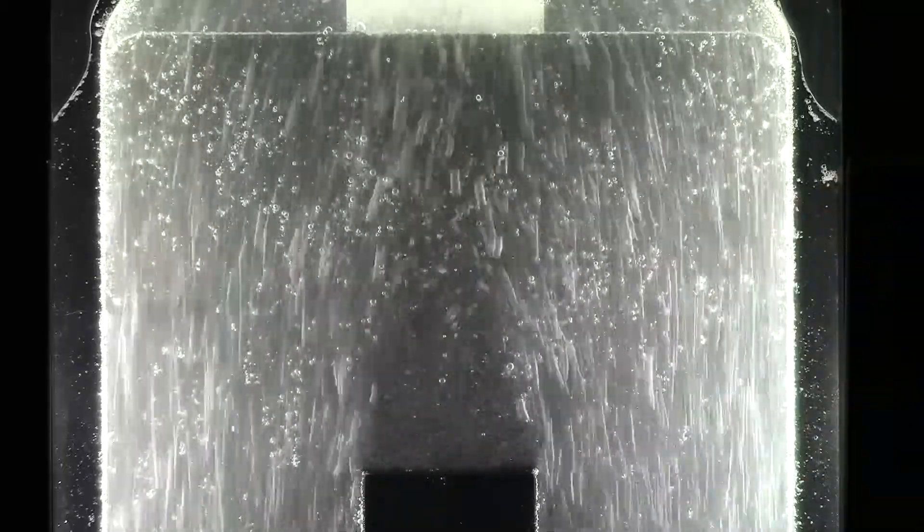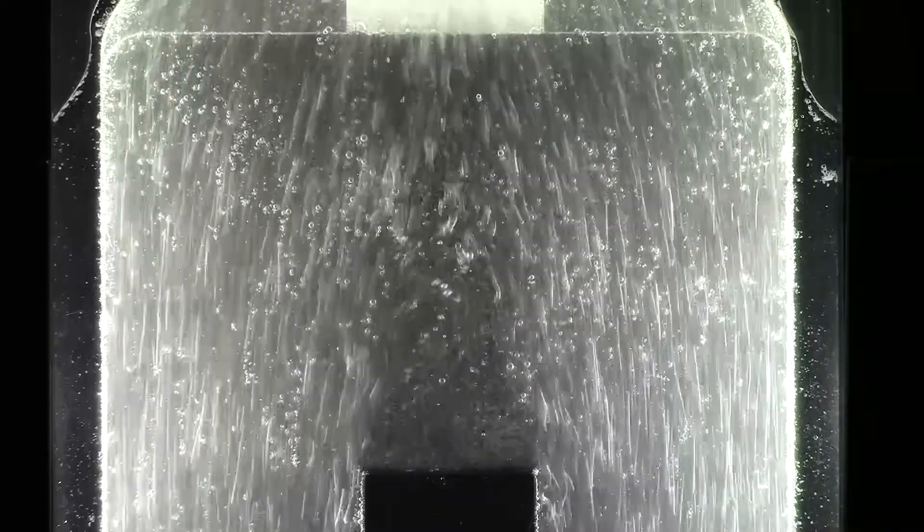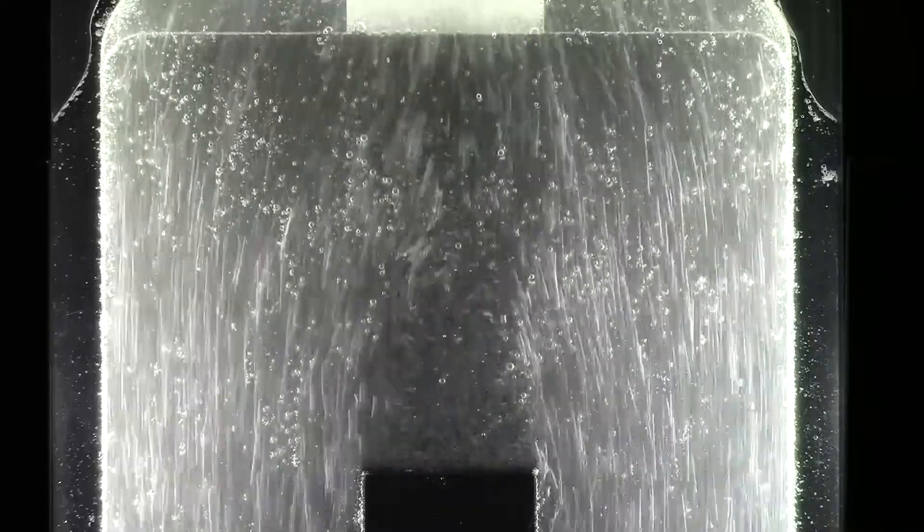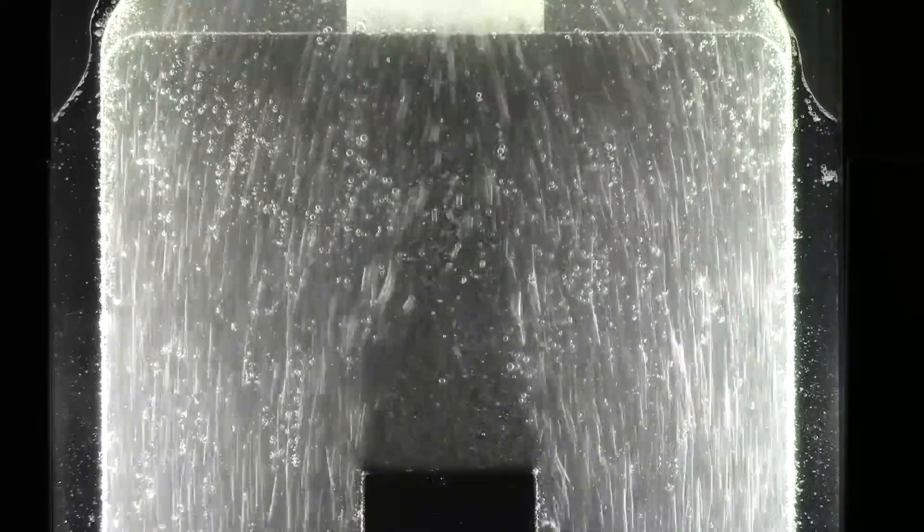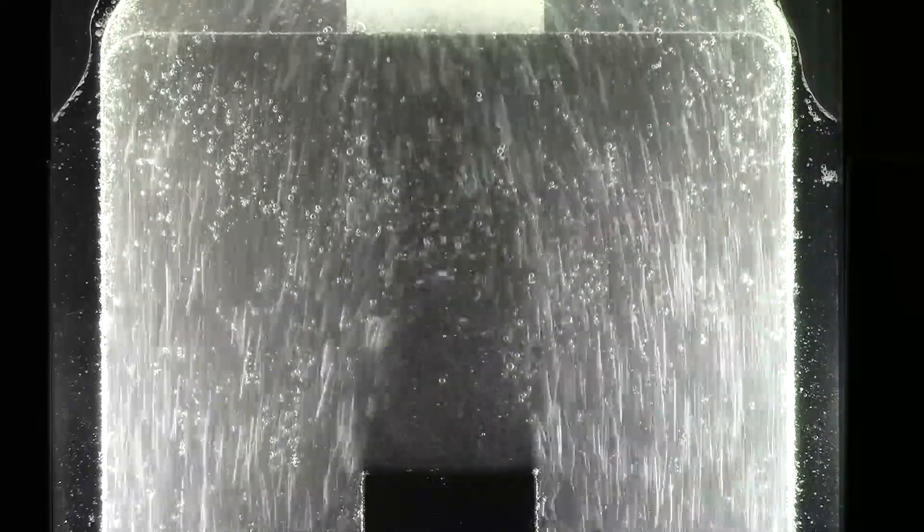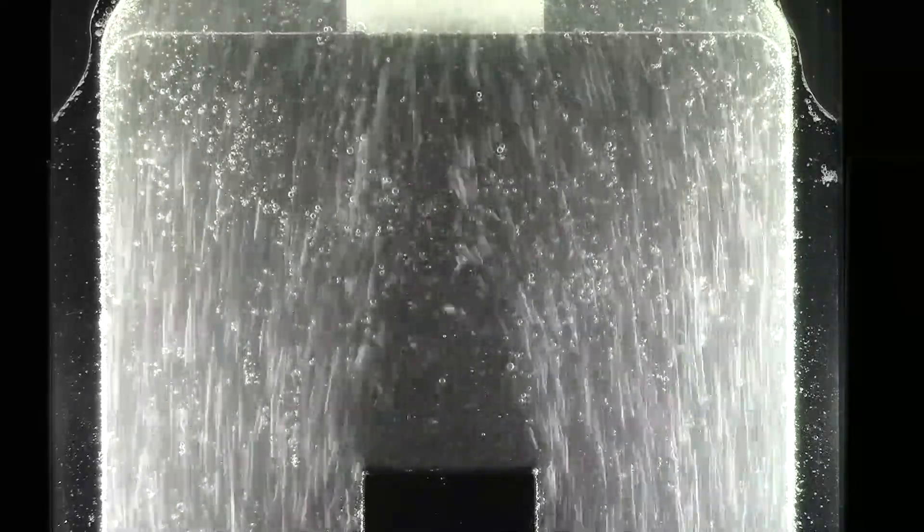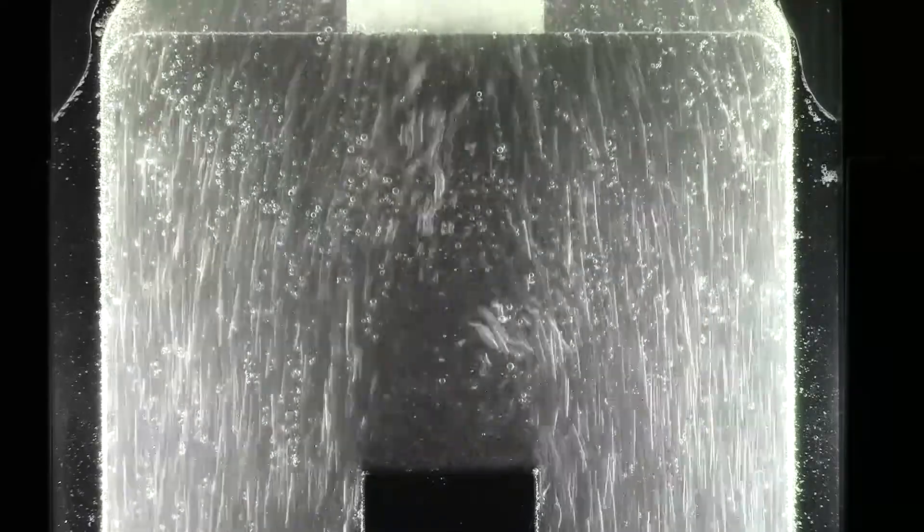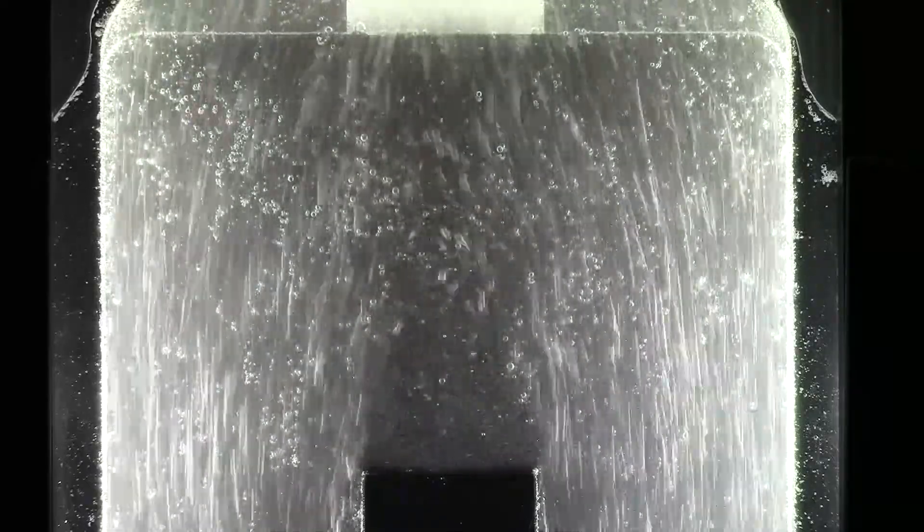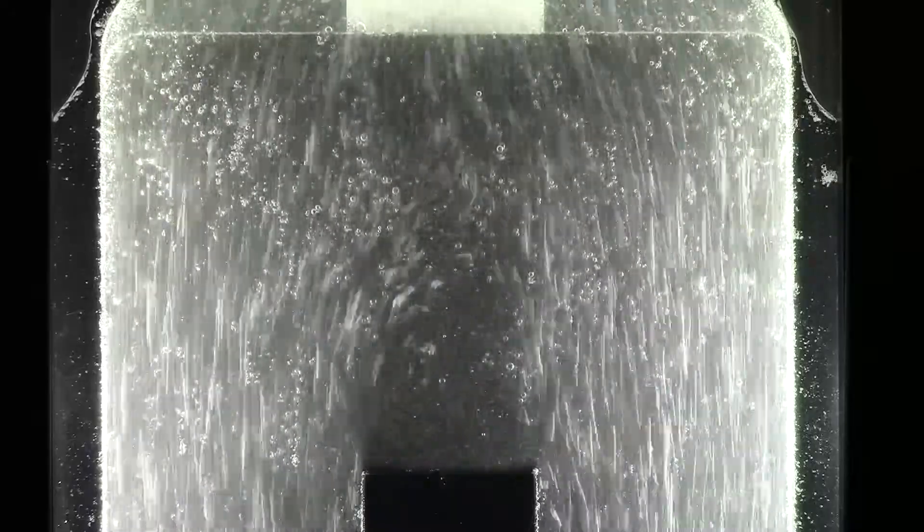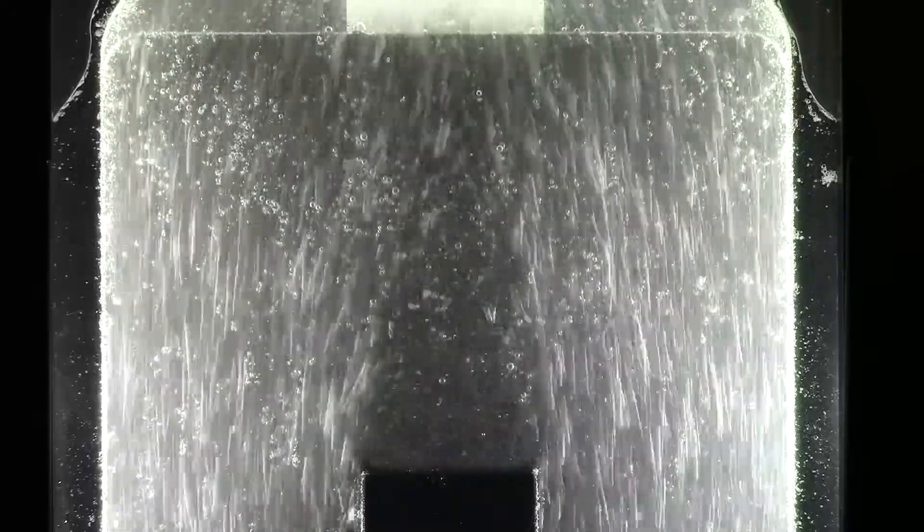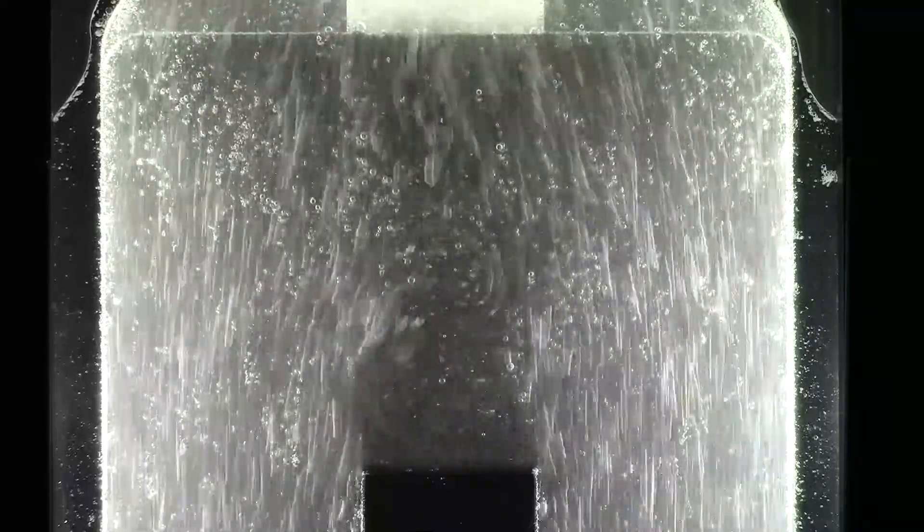The wake region becomes more unstable with higher velocity. It starts to vibrate left and right, and the length of the wake increases with velocity.